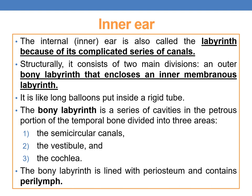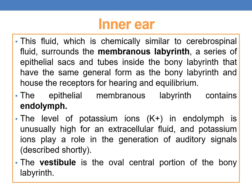The inner or internal ear is also called the labyrinth because of its complicated series of canals. Structurally, it consists of two main divisions: an outer bony labyrinth that encloses an inner membranous labyrinth — like a long balloon inside a rigid tube. The bony labyrinth is a series of cavities in the petrous portion of the temporal bone divided into three areas: the semicircular canals, the vestibule, and the cochlea. The bony labyrinth is lined by periosteum and contains perilymph, a fluid chemically similar to cerebrospinal fluid.